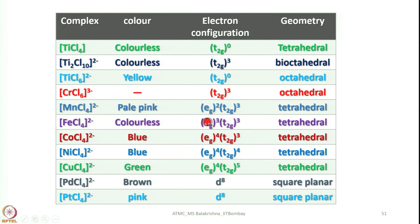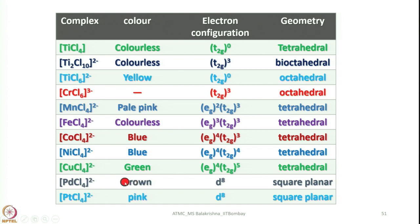FeCl4 2− is tetrahedral and colorless; tetrachlorocobaltate is blue and tetrahedral; nickel tetrachlorocomplex is blue with tetrahedral geometry; CuCl4 is green and tetrahedral. Palladium tetrachloropalladate and tetrachloroplatinate are brown and pink respectively, with a D8 electronic configuration and square planar geometries.